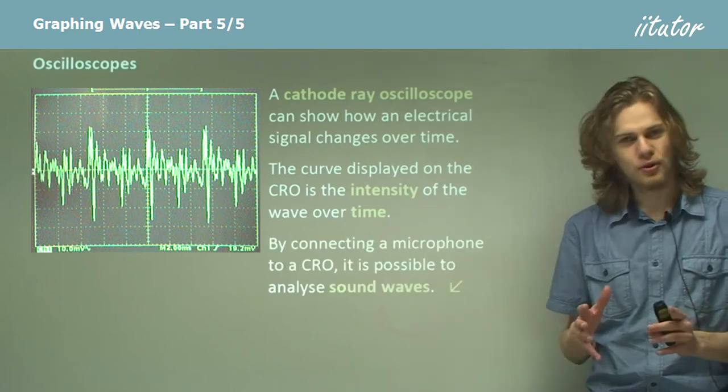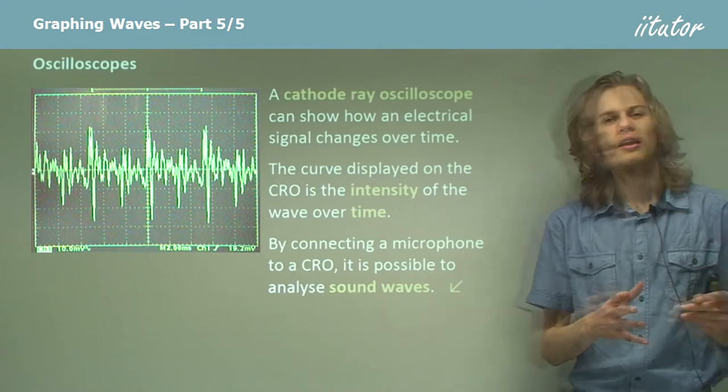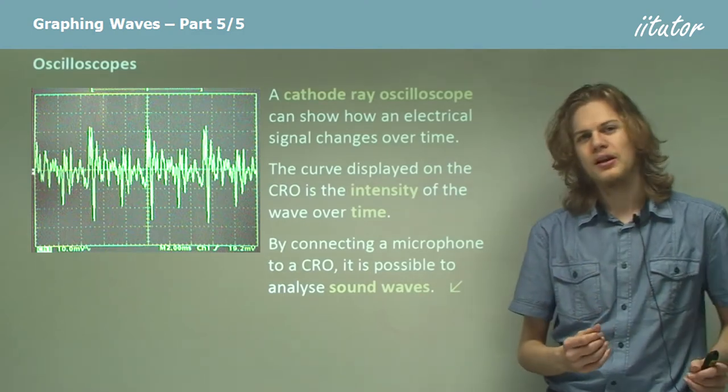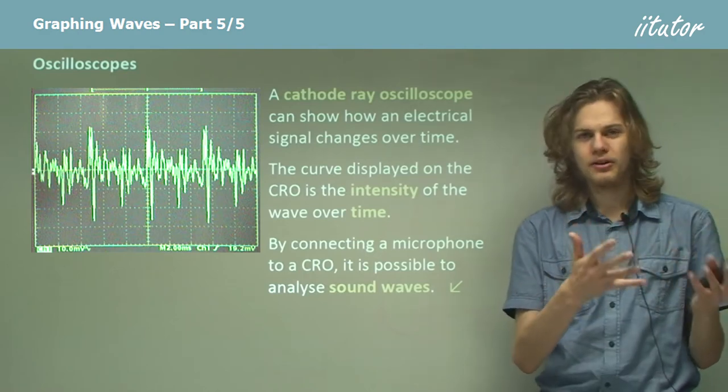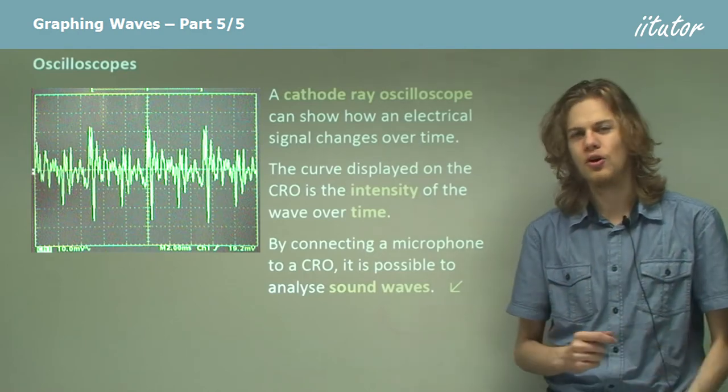So if we connect a microphone to a cathode ray tube then that will turn sound waves into electrical waves, and the cathode ray oscilloscope will be able to tell us things like the period or the frequency or the amplitude of the sound wave.